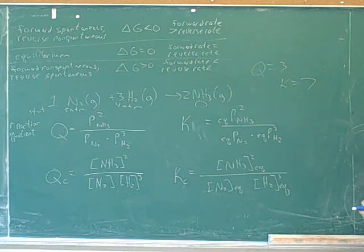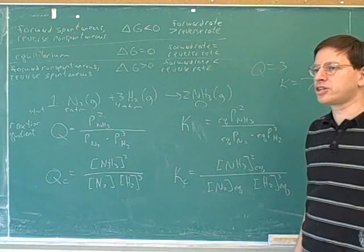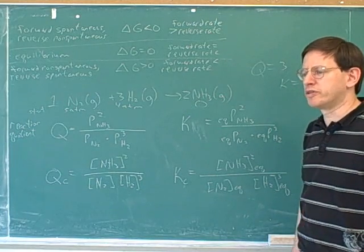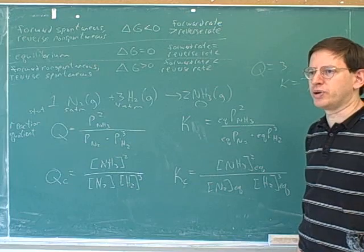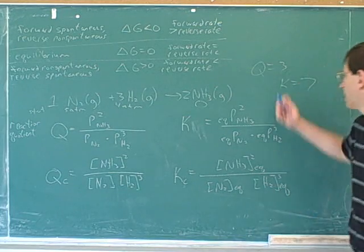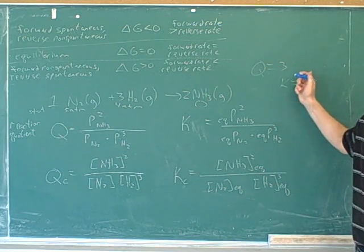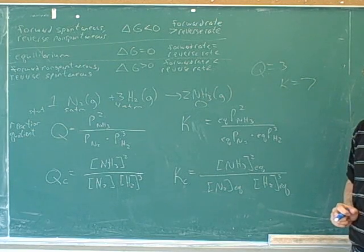If Q is 3 and K is 7, is the net reaction going to want to move forward, move reverse, or stay put? Forward. Yeah, because we haven't gotten to equilibrium yet. We haven't gotten far enough forward. So the net reaction is going to want to go forward.